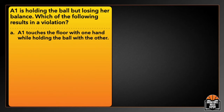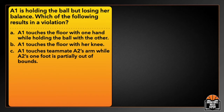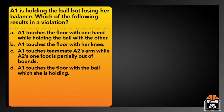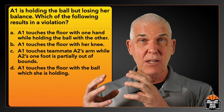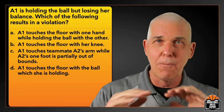Next question: A1 is holding the ball but losing her balance. Which of the following results in a violation? A — A1 touches the floor with one hand while holding the ball with the other. B — touches the floor with her knee. C — touches teammate A2's arm while A2's foot is partially out of bounds. Or D — touches the floor with the ball which she is holding. Hands and feet are always legal — the player could go down to a prone or push-up position holding the ball on one hand.